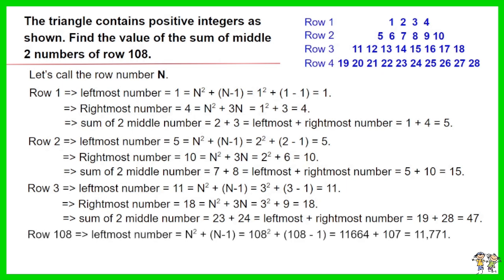As such, the leftmost number of row 108 equals 108² + 108 - 1, equals 11,664 plus 107. The result is 11,771.